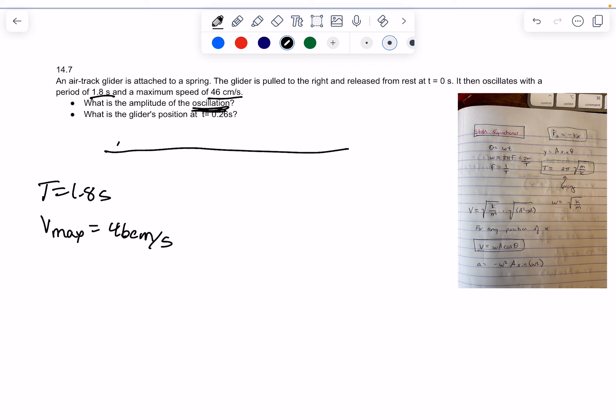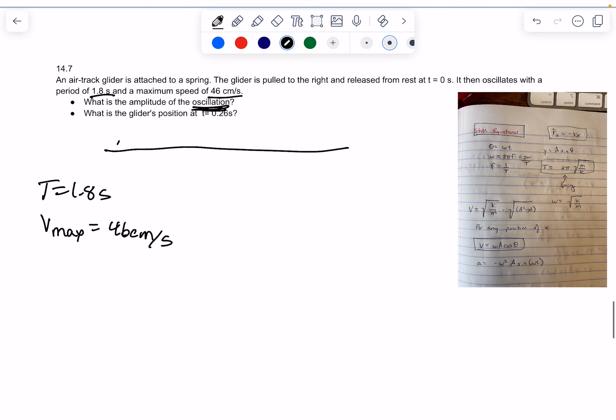What is the amplitude of the oscillation? So, if you recall from previous videos, I don't have it on my equation sheet here, but V max is equal to 2 pi frequency times A.